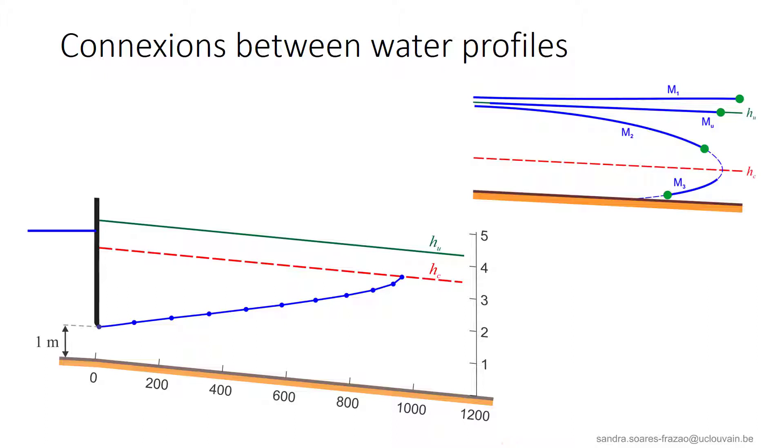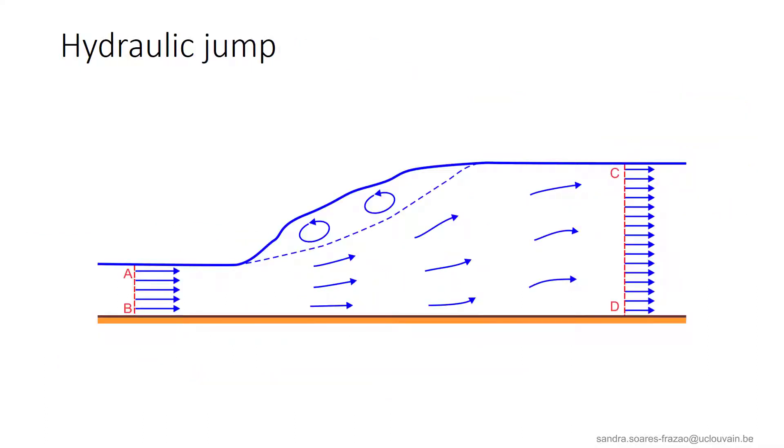We have explained before that a supercritical flow profile, such as the M3 profile here, does not depend on the downstream conditions, as the information cannot travel back in the upstream direction. So there is obviously a conflict between the upstream supercritical flow with our M3 profile and the downstream conditions with a water depth for example of 5 meters. Such a conflict is solved by a hydraulic jump.